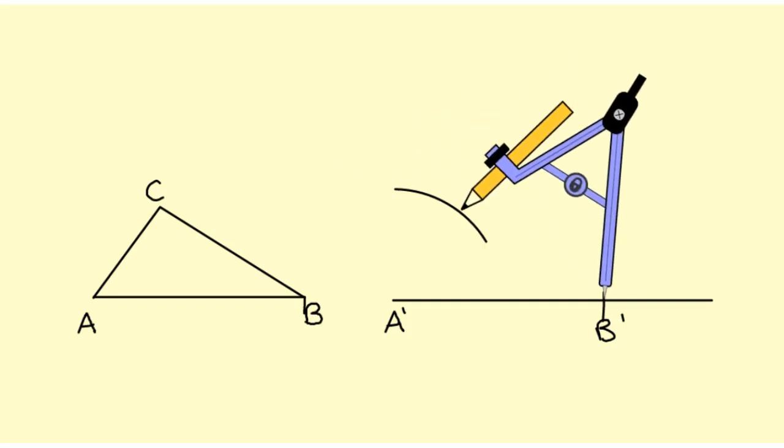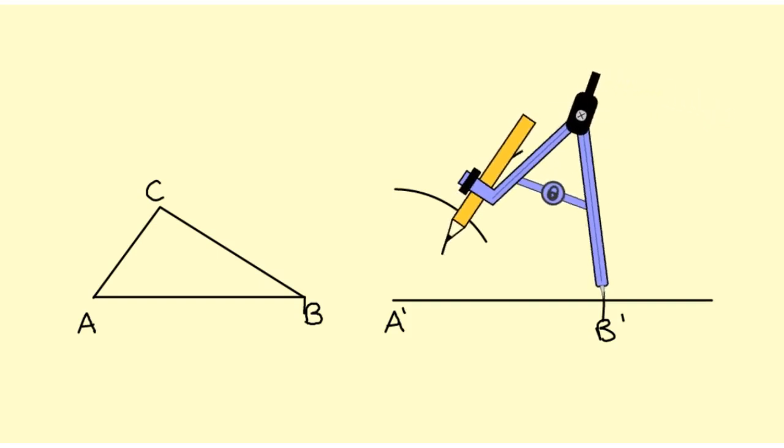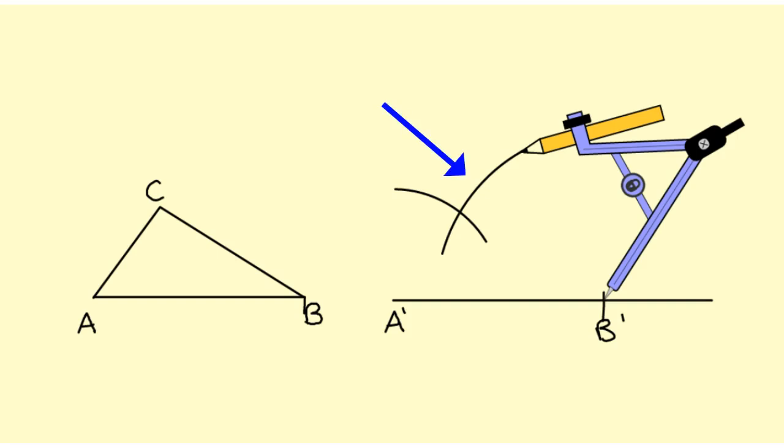I come over to point B', and the side of my triangle that has length BC has to fall somewhere along this arc.